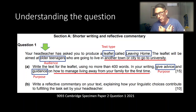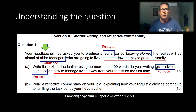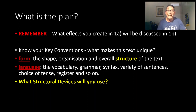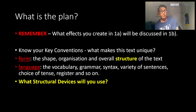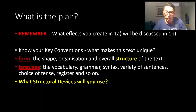Think about what Cambridge is asking for. If you're a young person about to go to university in another town, what sorts of things would you need to think about? You need a plan. Remember that what you write in 1a you'll be discussing in 1b, so know your key conventions. These are what make your text unique — you're going to make decisions based on your text type, which in this case is a leaflet.